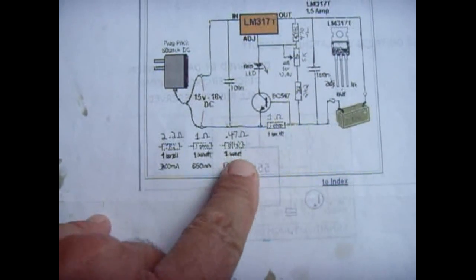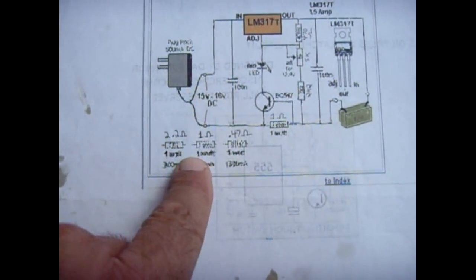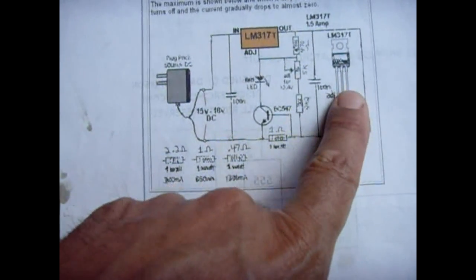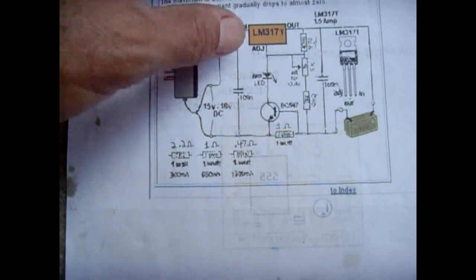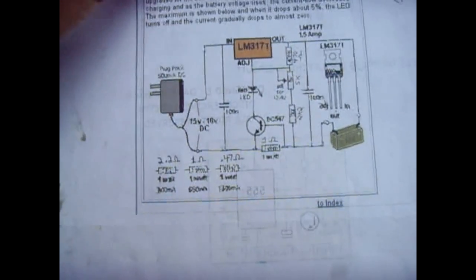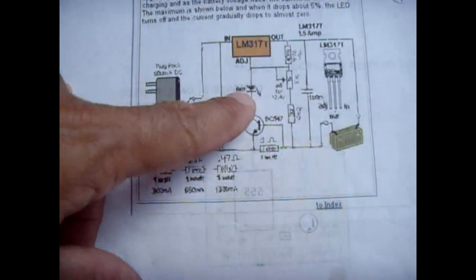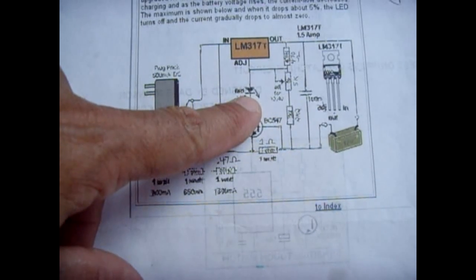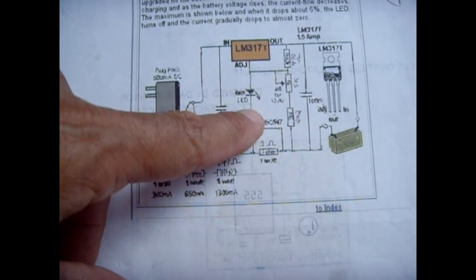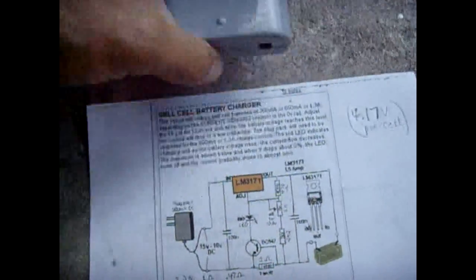The charging current is dependent upon which resistor value you use, so it's very easy to set. It uses an LM317T and you have a charging LED light here. When the vacuum cleaner, in my case, is placed into the charging cradle, the red light will come on if it needs to be charged. As the voltage rises and nears completion of charging, the light will go out and there's no more current going into this battery pack.